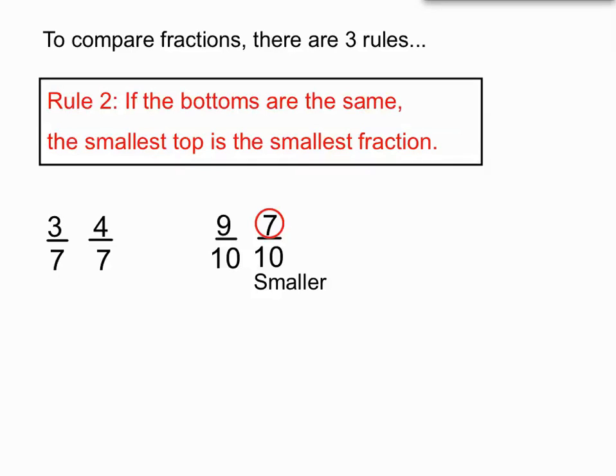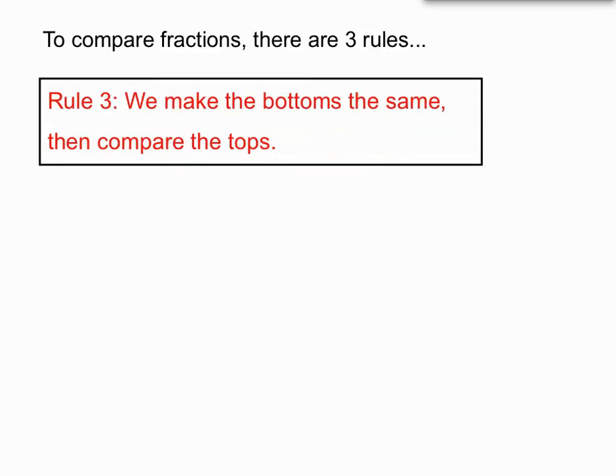It gets a bit tricky. We've got the first rule with the tops the same and the second rule with bottoms the same. Now we have two fractions with different bottoms and different tops. The way we compare fractions is we make the bottoms the same and then we compare the tops.